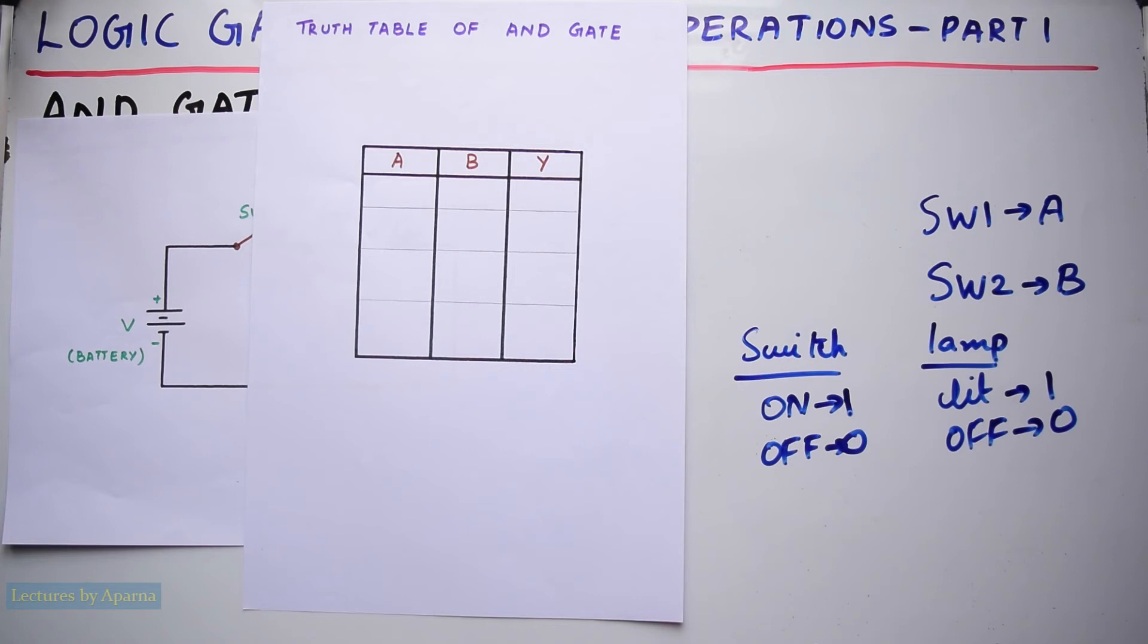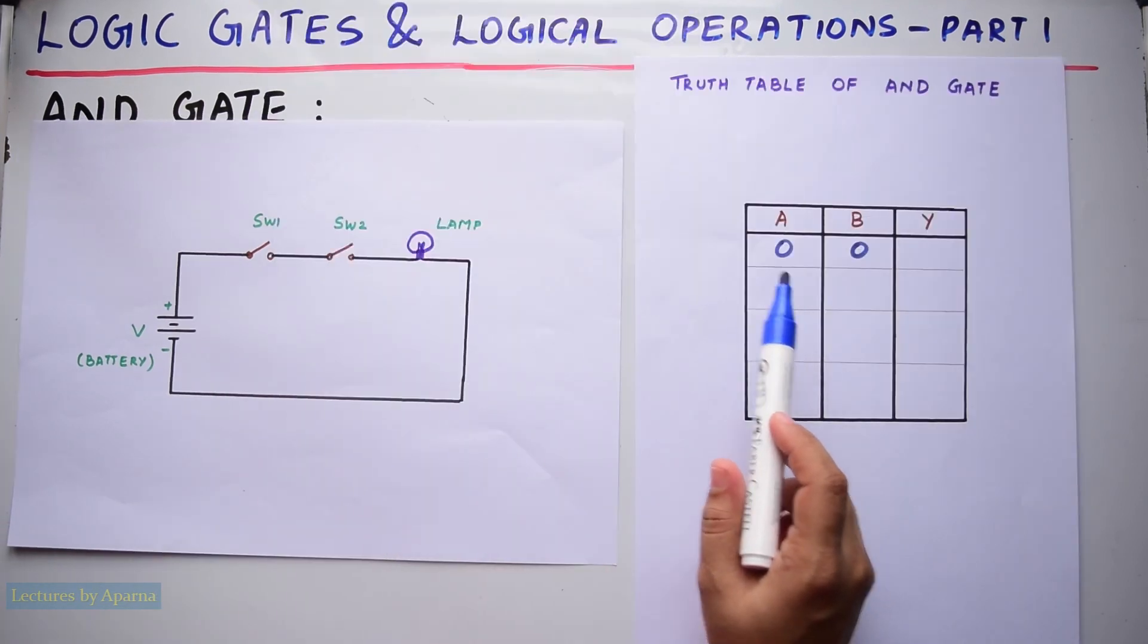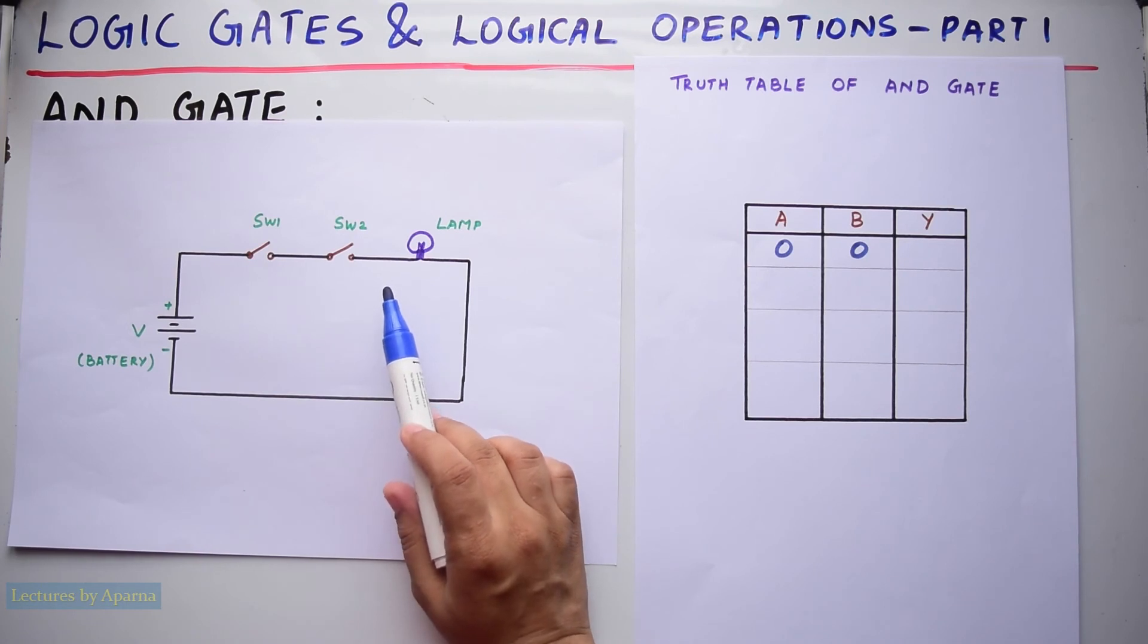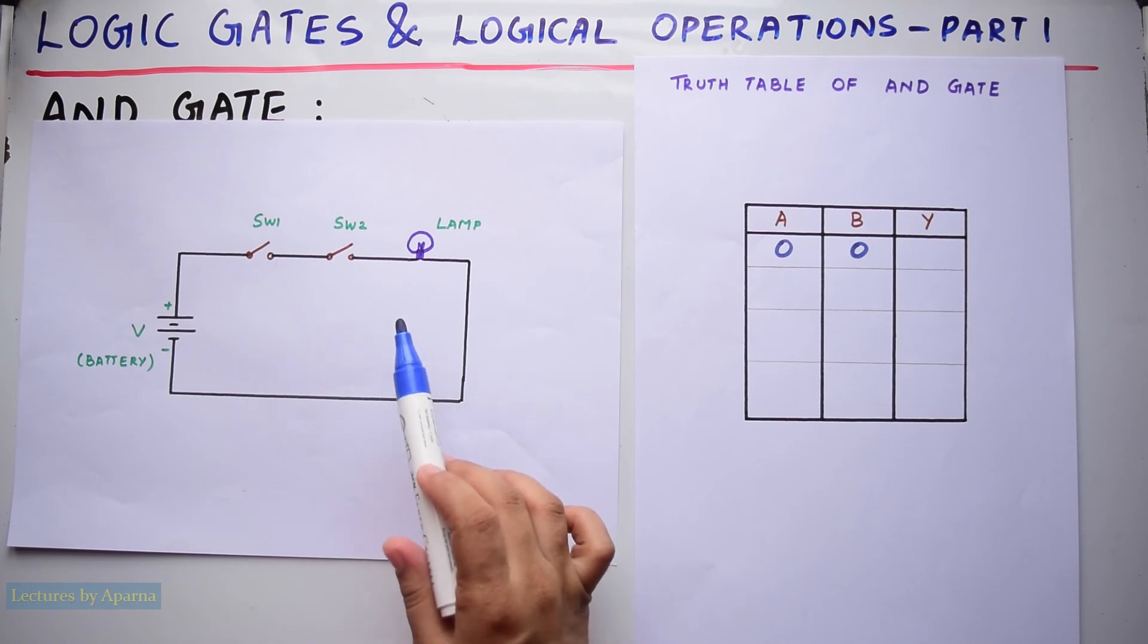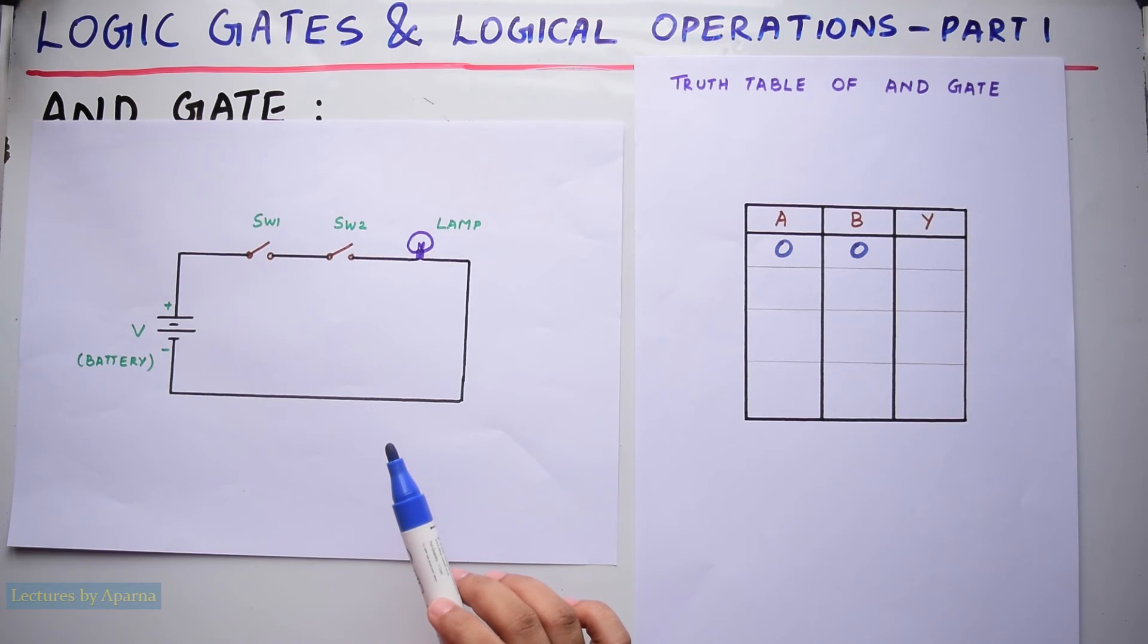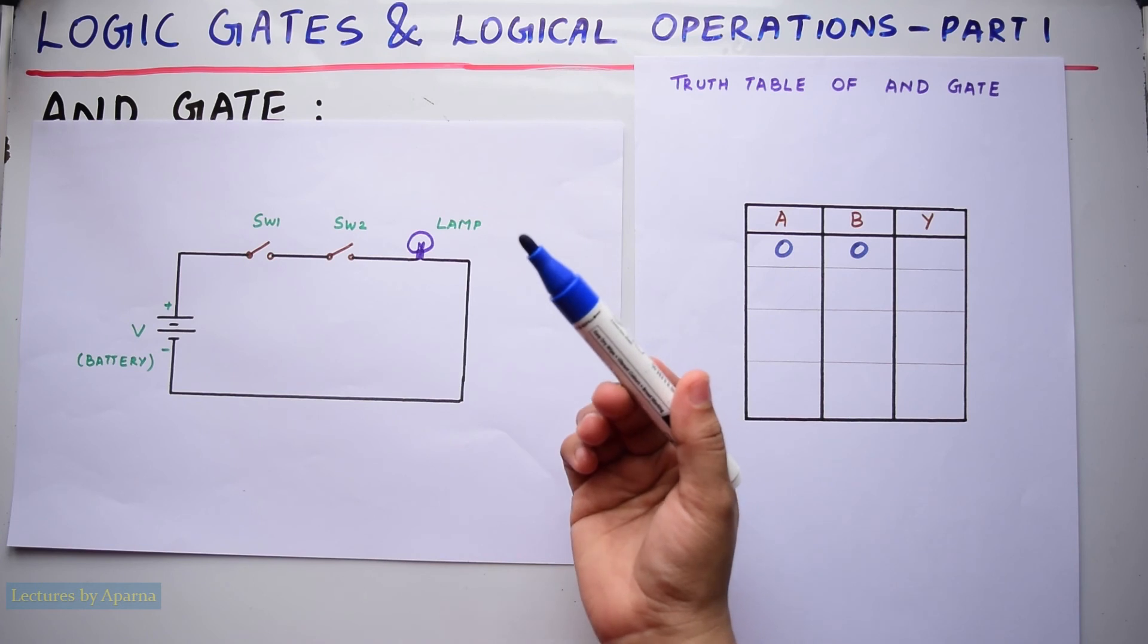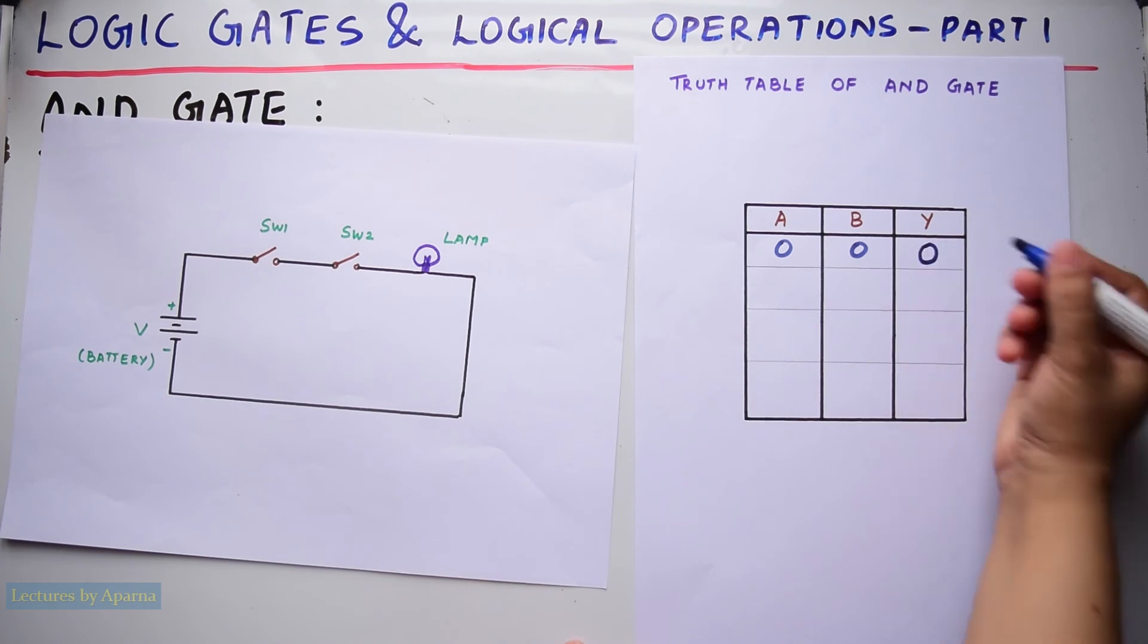First let us consider the case when A equals 0 and B equals 0. This means that switch 1 is OFF and switch 2 is also OFF. When two switches are OFF, it means that there is no connection between the lamp and the battery. So there is no power coming to the lamp from the battery. So the lamp will be OFF, meaning logic 0 at the output. So Y will be equal to 0.